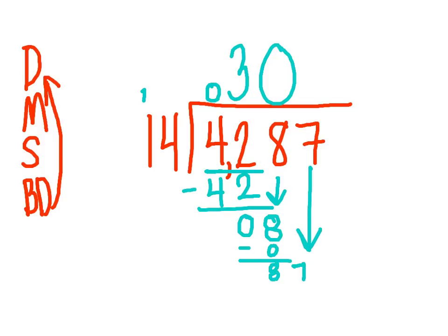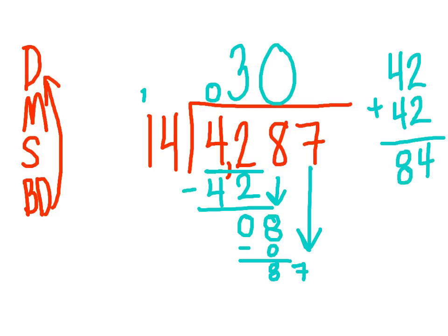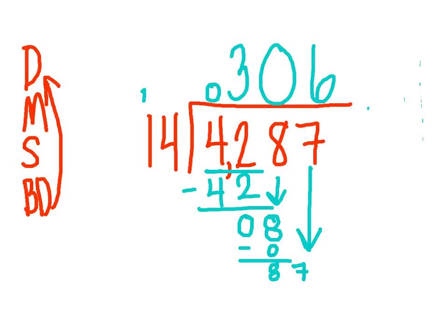Bring down the 7. Think about how many times 14 will go into 87. If I know that 3 fourteens is 42, I could double that and make it 6 fourteens, which would be 42 plus 42 is 84. So we need to do 6 times 14: 6 times 4 is 24, carry the 2, 6 times 1 is 6 plus 2 more is 8. I subtract and I get 3. There's nothing left to bring down, so my remainder will be 3.